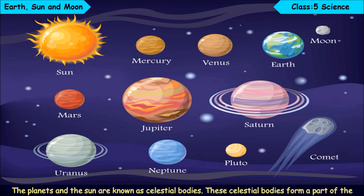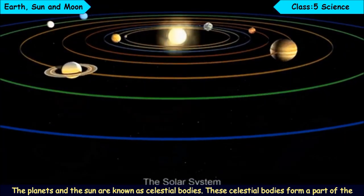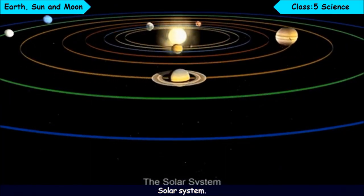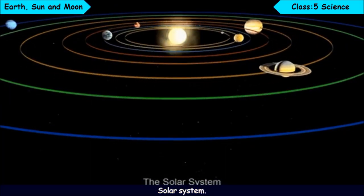The planets and the sun are known as celestial bodies. These celestial bodies form a part of the solar system. Let us learn more about the solar system.